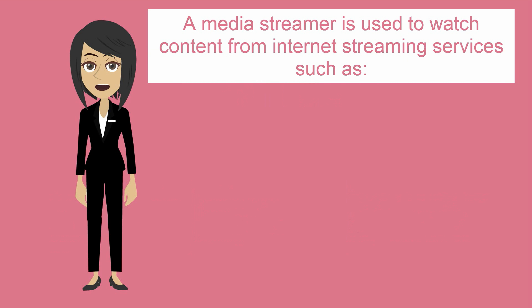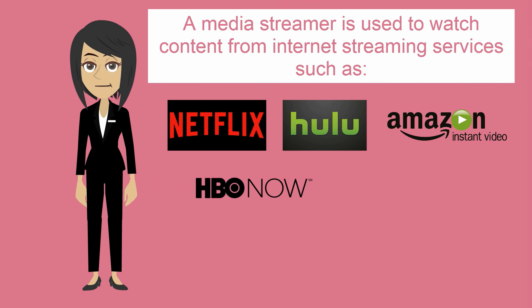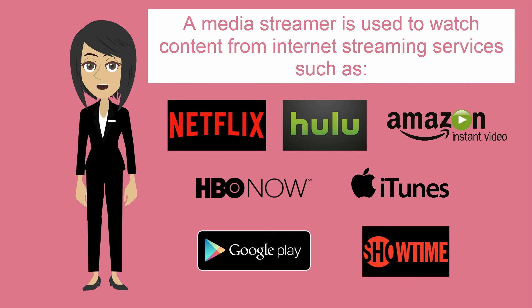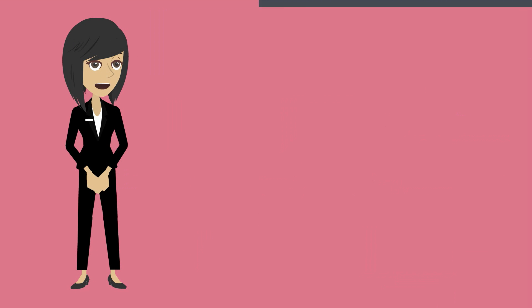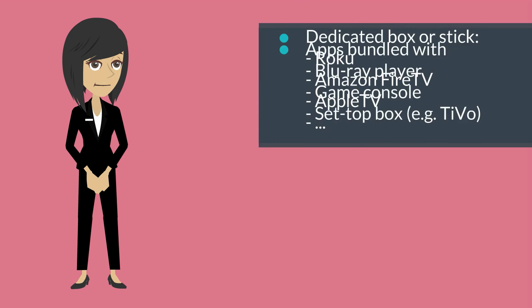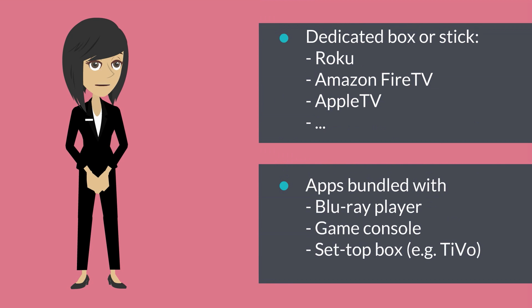A media streamer is a device you use to watch Netflix, Hulu, or Amazon shows on your TV. This could be a dedicated streaming box from the likes of Roku, Amazon, or Apple. Or it could be your Blu-ray player, game console, or even a TiVo box providing you streaming apps.